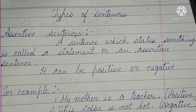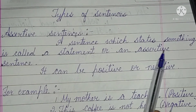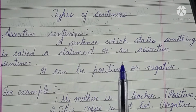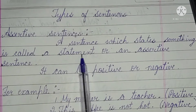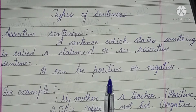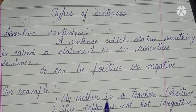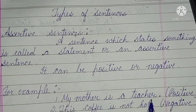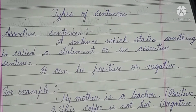The first type is assertive sentence. A sentence which states something is called a statement or an assertive sentence. It can be positive or negative. For example — positive: 'My mother is a teacher.' Meri maa jo hai wo teacher hai. Negative example: 'This coffee is not hot.' Coffee jo hai wo garam nahi hai.